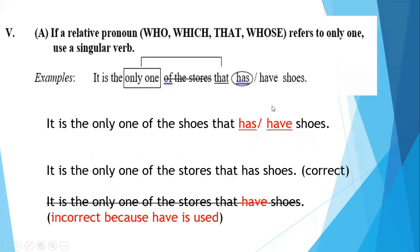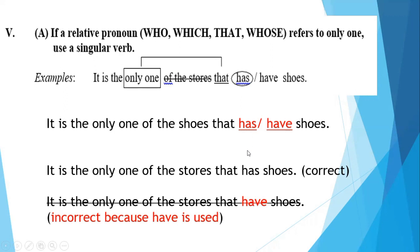Now let's discuss a very useful structure involving a relative pronoun. Here is the sentence: 'It is the only one of the stores that has or have shoes.' We have two options. If you try it before my explanation — 'it is the only one of the stores that has or have shoes' — the correct answer is 'has.' So: 'It is the only one of the stores that has shoes.' This is the correct sentence.